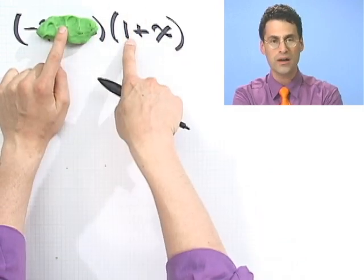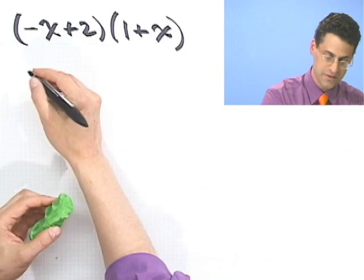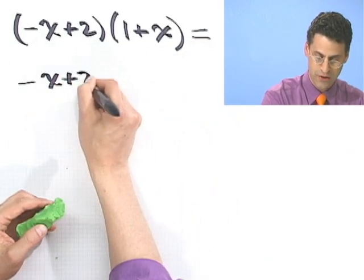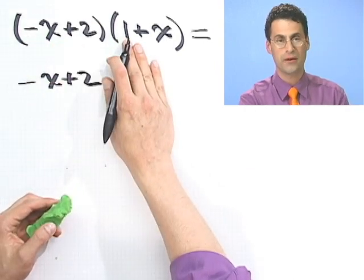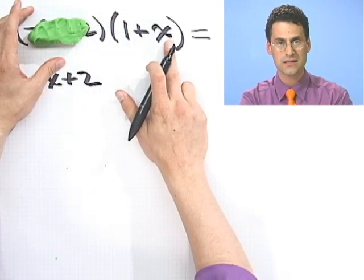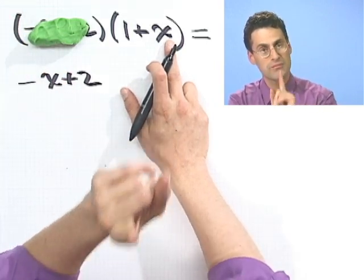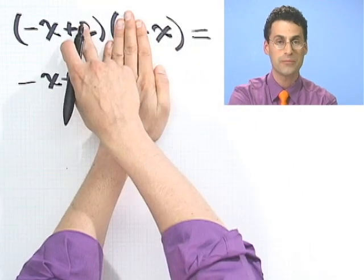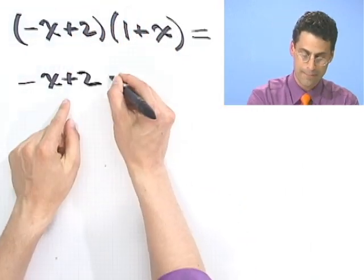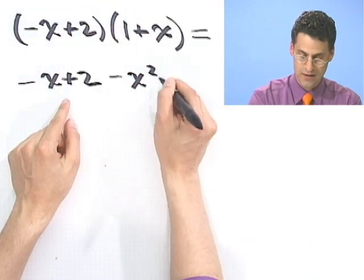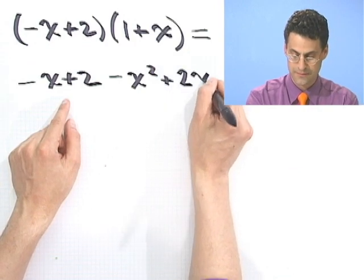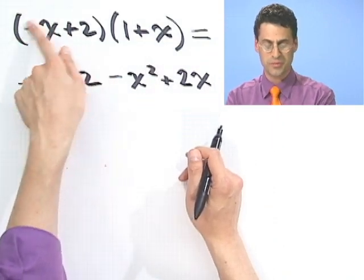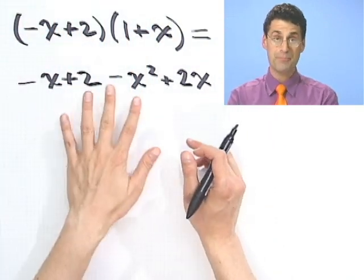If I distribute anything times 1, it's just itself. So in fact, this would just give me a minus x plus 2. That's what I get when I just take the whole blob and multiply it by 1. If I now take the whole blop and multiply it by the x, that actually will require me another distribution. It would be x times all that. And so that would be a minus x squared plus 2x. Distributing that across. So when you're FOILing, you're just taking every term here and multiplying it by every term here, and so on.